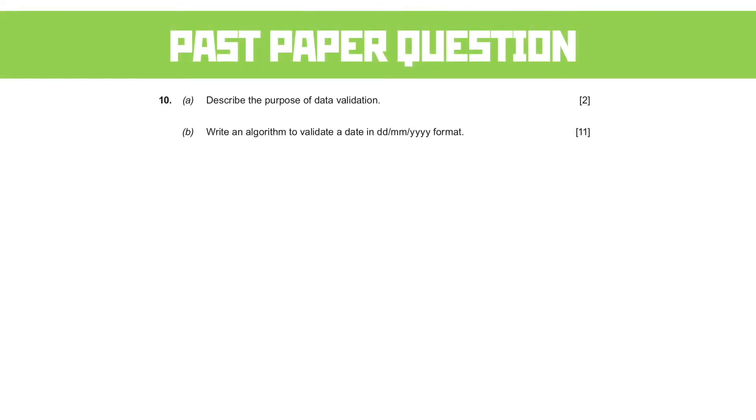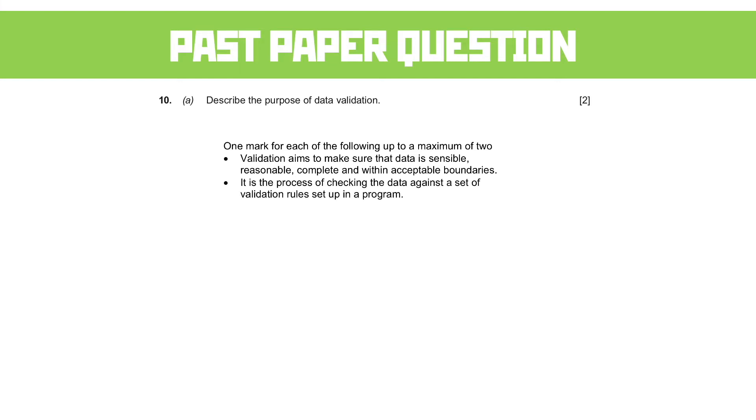Question 10. Describe the purpose of data validation. For two marks, it's going to be very straightforward. We're going to say that validation aims to make sure that the data is sensible, reasonable, complete, and within acceptable boundaries. We're also going to say it's the process of checking the data against a set of validation rules set up in a program.